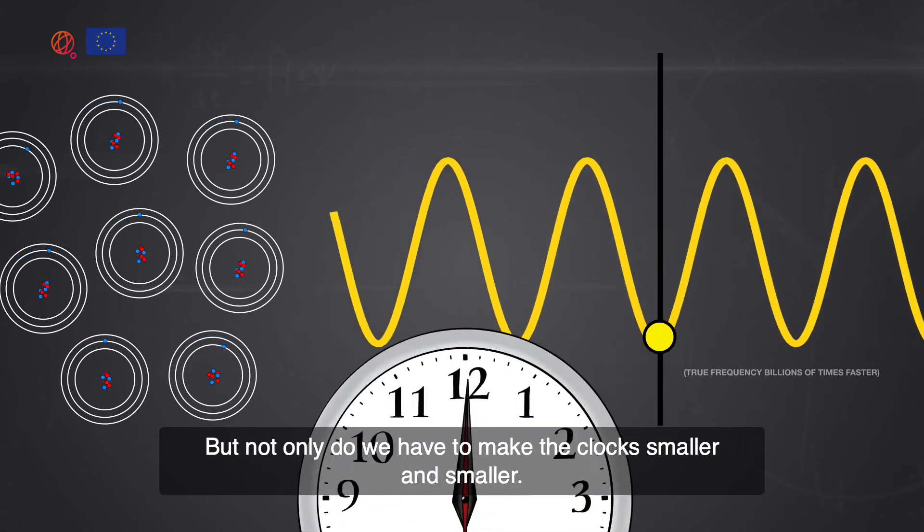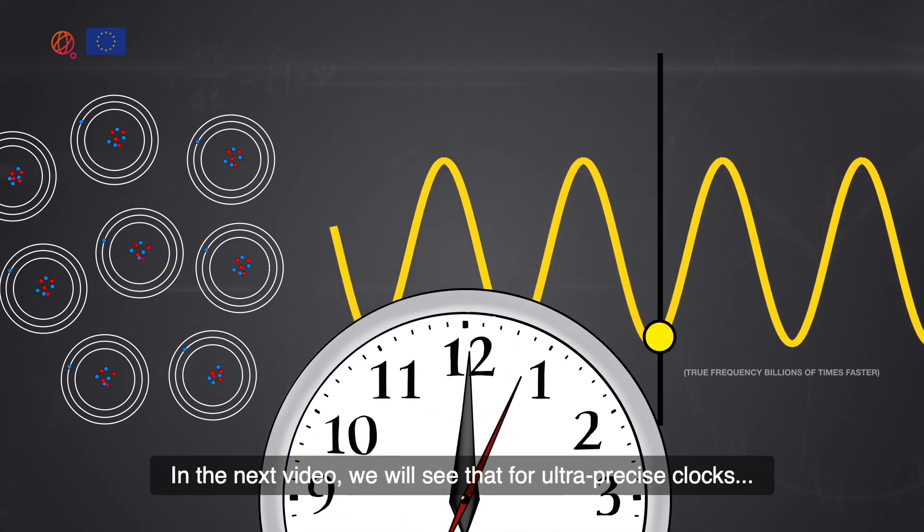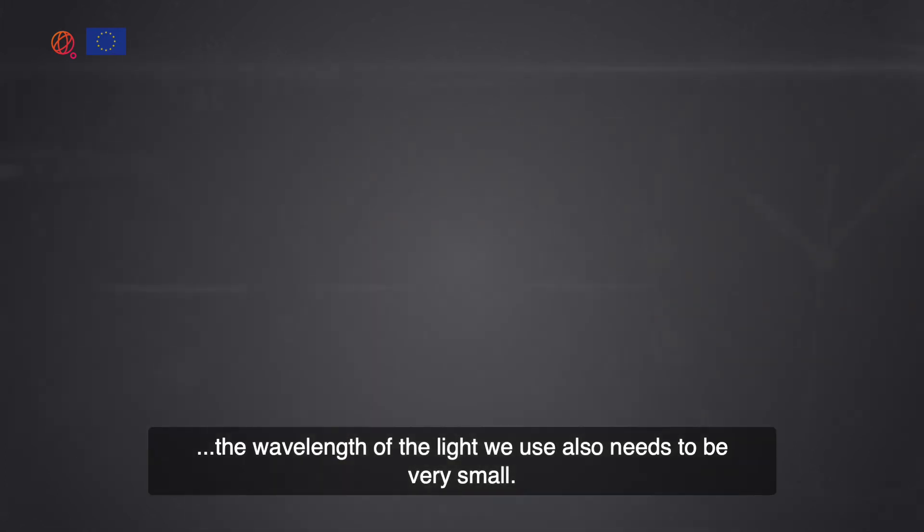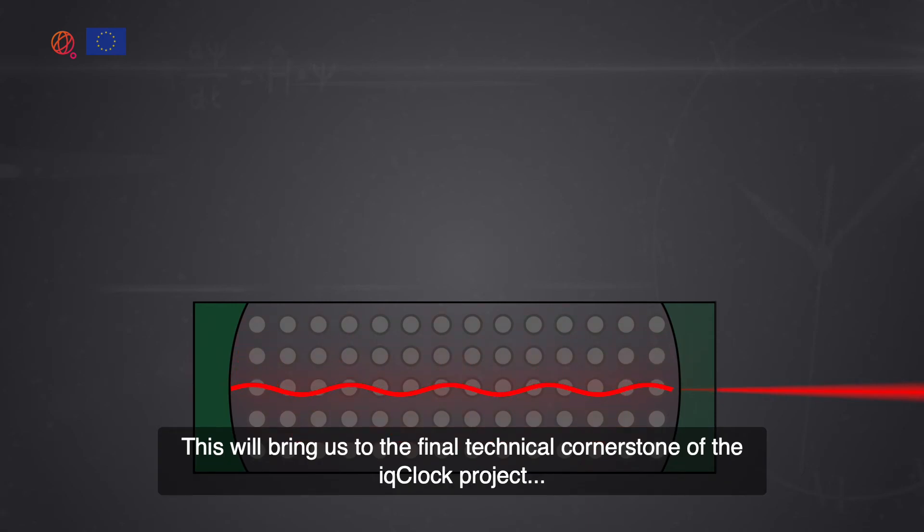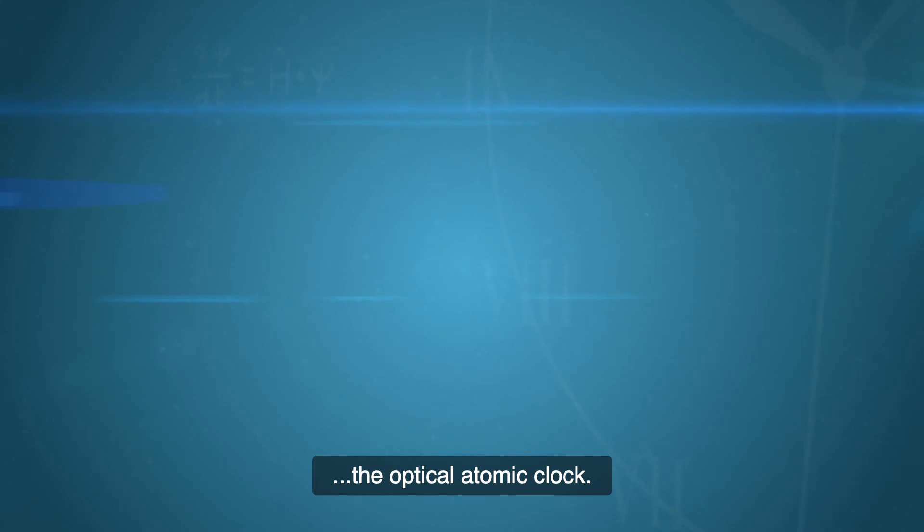But not only do we have to make the clocks smaller and smaller. In the next video, we will see that for ultra precise clocks, the wavelength of the light we use also needs to be very small. This will bring us to the final technical cornerstone of the IQ clock project, the optical atomic clock.